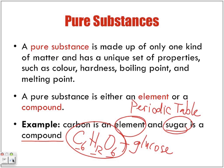This one compound is considered a pure substance because it is consistent throughout every single particle of the matter of sugar. Every bit of matter that makes up glucose is made up of this same exact composition.